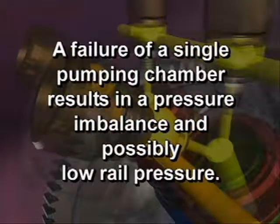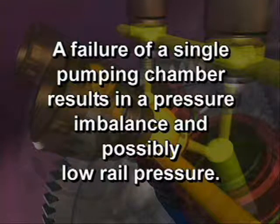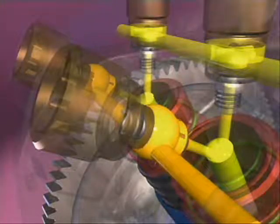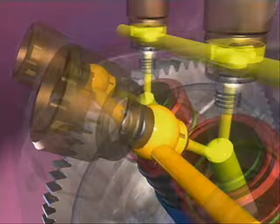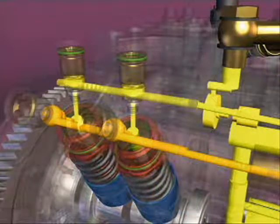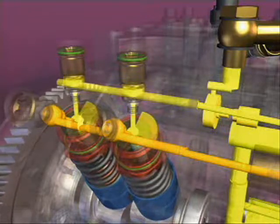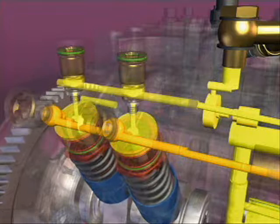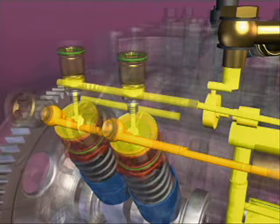A failure of a single pumping chamber results in a pressure imbalance and possibly low rail pressure. The ECM can detect this condition and will register a fault code. Fuel that leaks past the barrel and plunger is collected in a drilling in the pump head and routed to the air bleed circuit for return to the fuel tank.